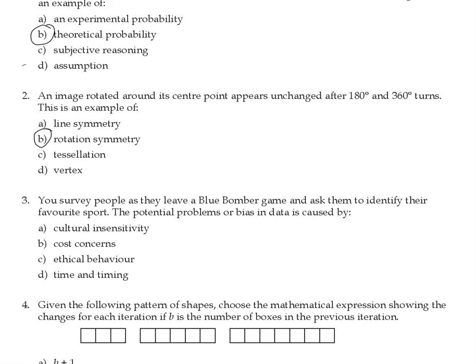Question 3: You survey people as they leave a Blue Bomber game and ask them to identify their favorite sport. The potential problem or bias in the data is caused by cultural insensitivity. In different countries, the majority of people prefer certain sports — in Canada it's hockey, in Europe it's soccer, in the United States it's basketball or American football. So the correct answer is cultural insensitivity.